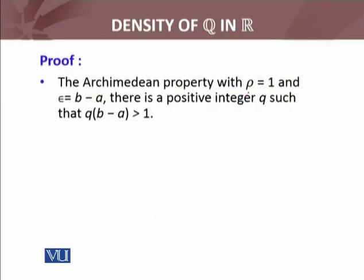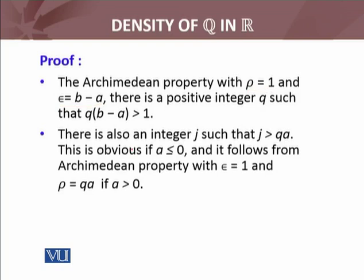In the Archimedean property, we take rho equal to 1 and epsilon equal to b minus a. Since b and a are real numbers with b greater than a, b minus a is greater than 0. By the Archimedean property, there exists a positive integer q such that q times (b minus a) is greater than 1.